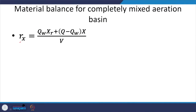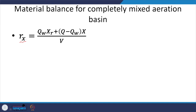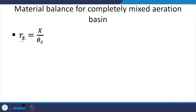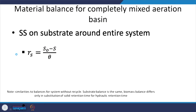This is rx_net — the net rate of microbial growth. We also looked at theta_c, which is a very important parameter: cell residence time or solids retention time, representing how much time the relevant microorganisms spend in your system. From that we get that rx_net equals x divided by theta_c.